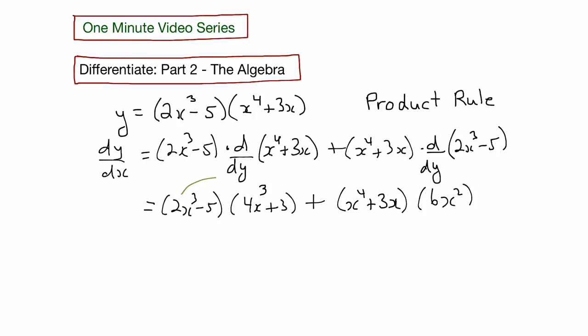So 2x cubed times 4x cubed would give us 8x to the sixth. 2x cubed times 3 would give us 6x cubed. Negative 5 times 4x cubed would give us minus 20x cubed. And negative 5 times 3 would give us negative 15.